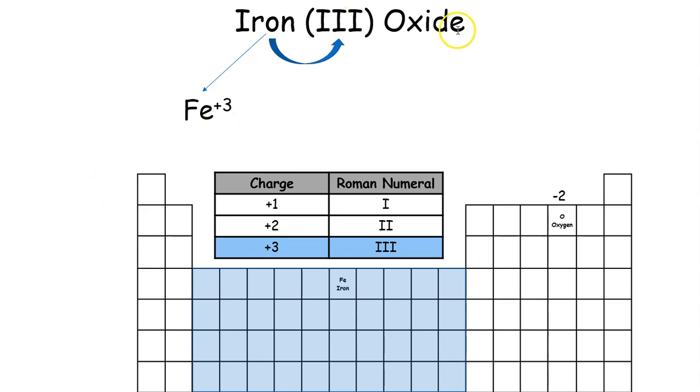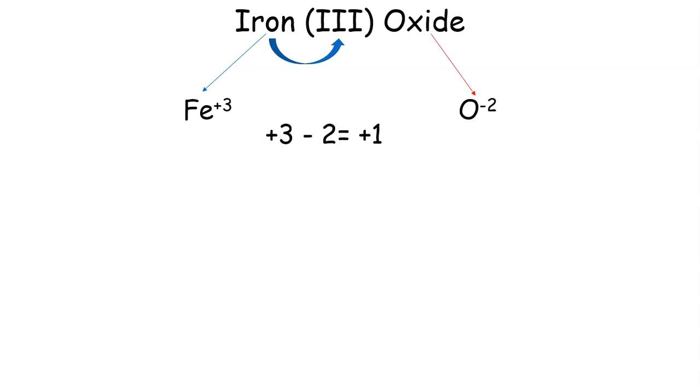The next thing is we have to look at oxide. Oxide is oxygen. So we come to our periodic table. Oxygen is right here. It has an uppercase O. And when it accepts two electrons, it'll become a minus 2 charge when it is an anion. So we have minus 2.